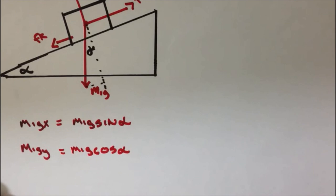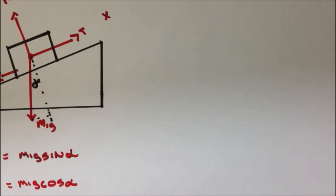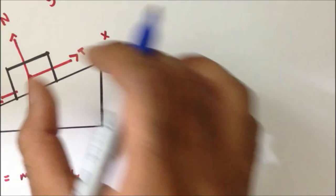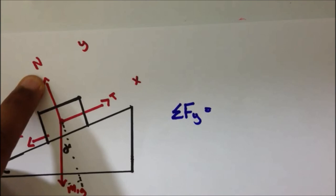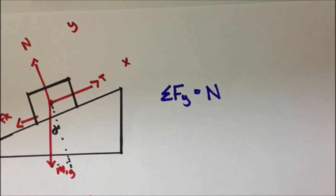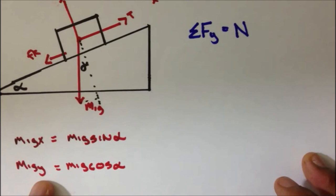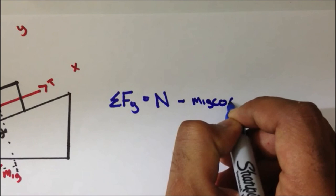Now we implement Newton's law in the y direction for this box. The sum of the forces in the y direction: we have the normal force which is positive, minus M1g cosine alpha — the component of weight perpendicular to the inclined plane — equals zero, because there is no acceleration in the y or perpendicular direction of the plane.